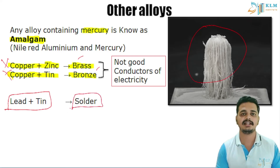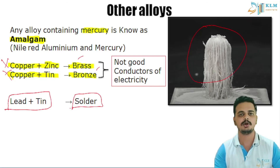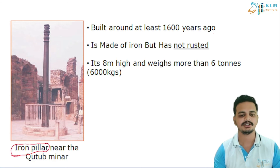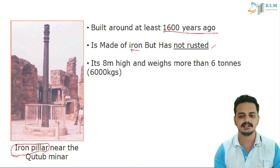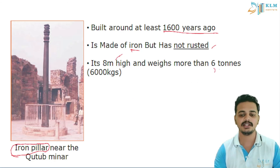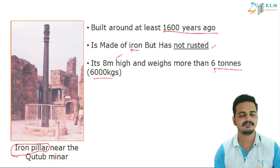In front of the Qutub Minar in Delhi, there is a famous iron pillar built around 1,600 years ago that has not rusted — a wonder that scientists have been researching for a long time. It is eight meters high and weighs more than six tons (6,000 kg). Indian iron workers had developed a method to prevent rusting of iron. That concludes the chapter on metals and non-metals — thank you students, have a great time.